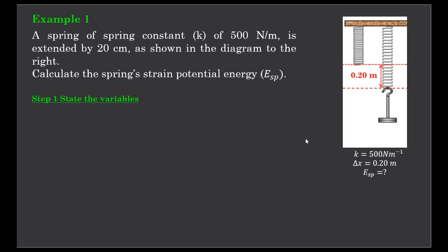So as always, let's look at the variables that we have available. There's a K or a spring constant of 500 newtons per meter. Now notice the newton slash meter is the same as the newton meter to the negative one. Different way of writing it, representing it, but it means exactly the same thing.